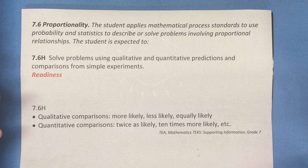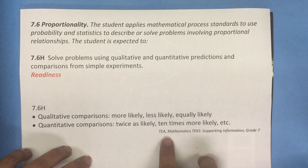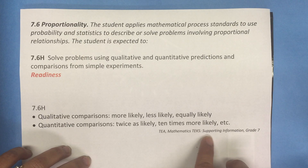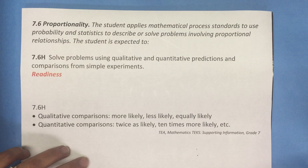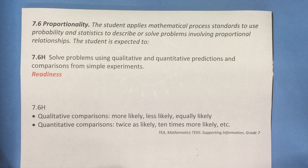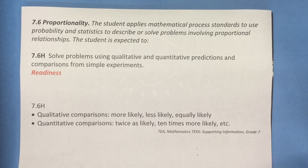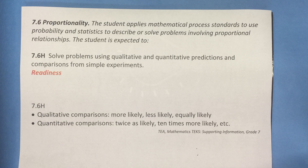I'd like to share some information from TEA. It comes from the mathematics TEA supporting information document for grade 7. In that document it says that qualitative comparisons use vocabulary or terminology such as more likely, less likely, and equally likely. Quantitative comparisons use vocabulary or terminology such as twice as likely or ten times more likely, etc.